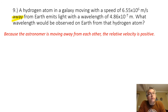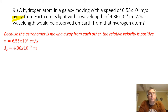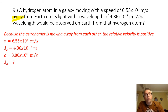Away is positive and toward is negative. So the relative velocity between the earth and the galaxy is positive 6.55 times 10 to the sixth meters per second. The wavelength emitted by the hydrogen atom (the source) is 4.86 times 10 to the minus seventh meters. The speed of light is 3.00 times 10 to the eighth meters per second, and we are looking for the observed wavelength.